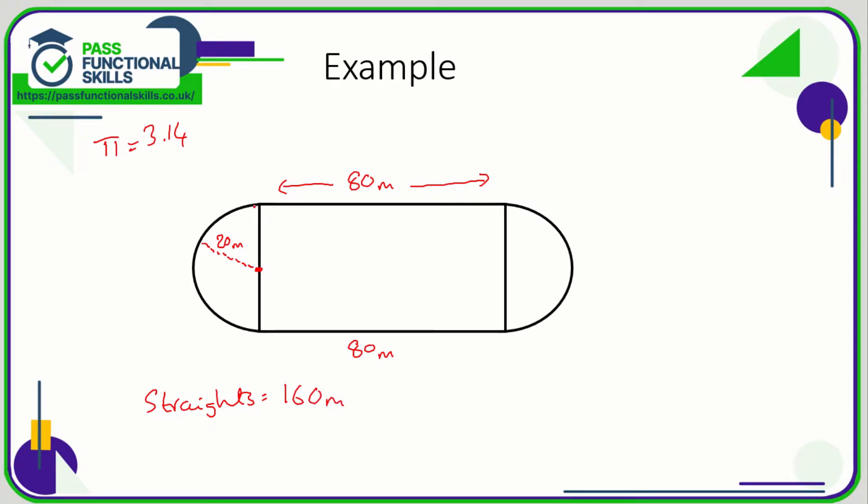This is the circumference of a semicircle, and this is also the circumference of a semicircle. So we need to work out the circumference of two semicircles. Now, two semicircles is one circle. So basically, all we need to do is work out the circumference of a circle that has a radius of 20.